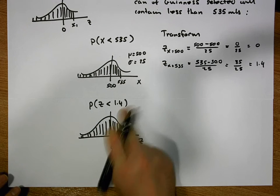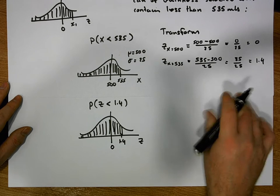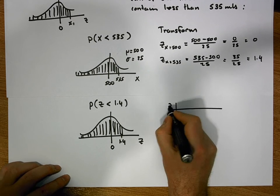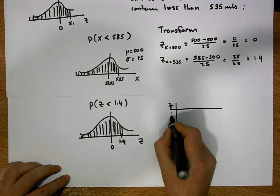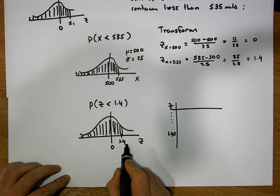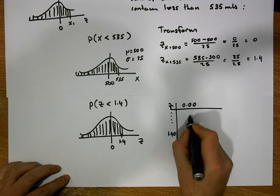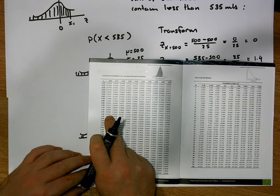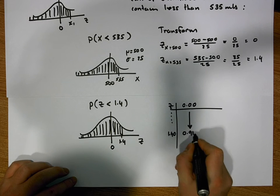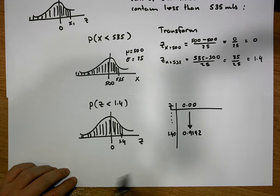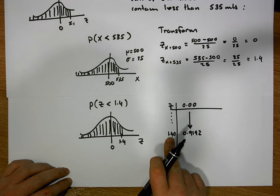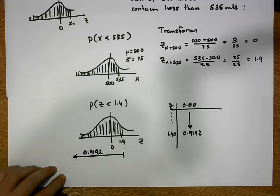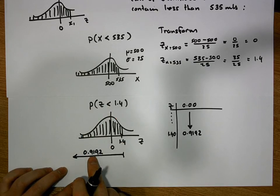Any time we have positive z-scores, we look them up immediately in our z-tables. We need to look up 1.40: coming down to 1.40, with second decimal digit 0, we go to 0.00 and triangulate. Looking up 1.40 in the tables, we get a value of 0.9192. When we look up a positive value on our tables, it always gives us the area to the left-hand side of that positive value. So the probability of observing a z-score less than 1.4 is equal to 0.9192.